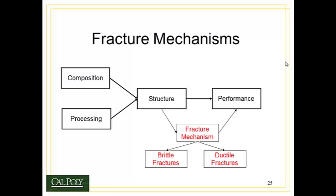Welcome back to the last of our short lectures on topic six, fracture and fatigue. Today we'll be looking at how things break when we look at them up close with microscopes. We call this concept fracture mechanisms, and we generally categorize fracture mechanisms into two groups: brittle fractures that happen suddenly, and ductile fractures that happen slowly over a period of plastic deformation.